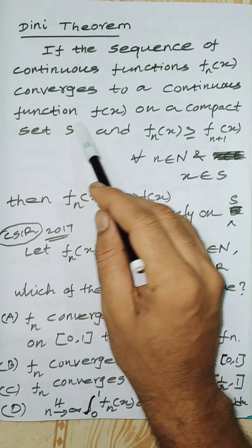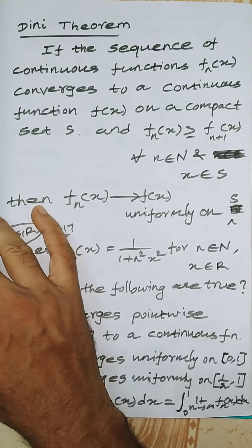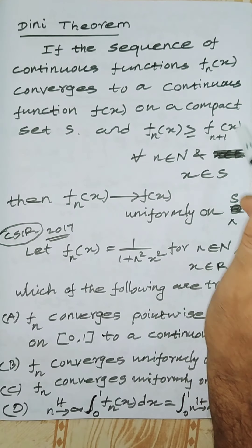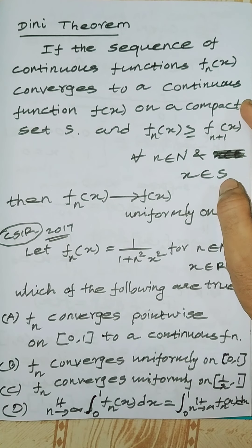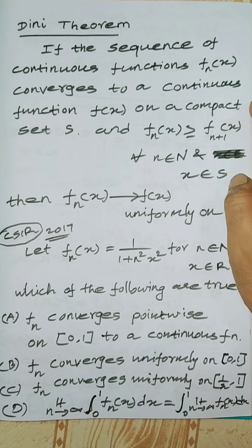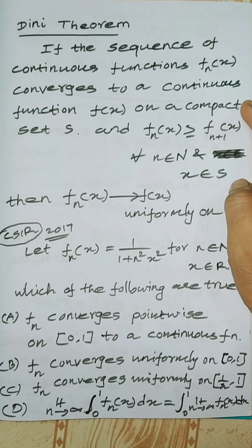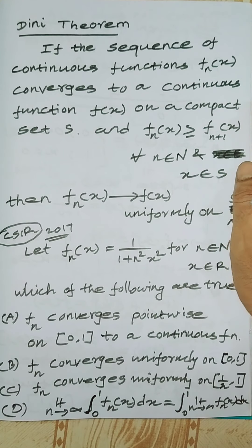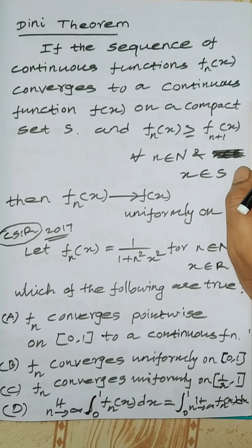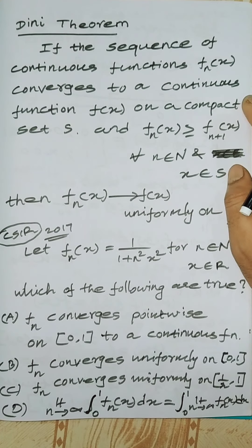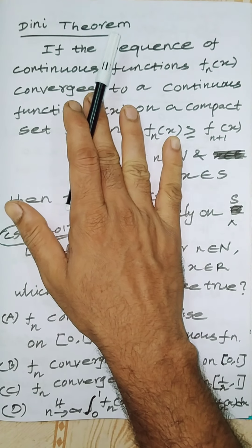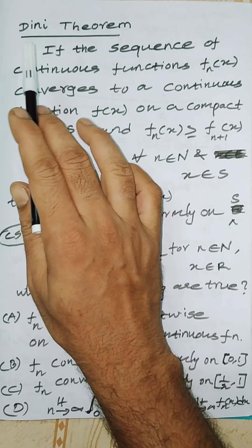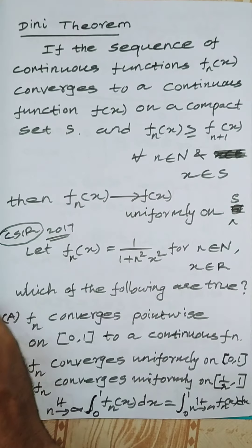Now let us see Dini's theorem — the first statement. This is also used to find whether a sequence of functions is uniformly convergent or not. This is the Dini theorem.